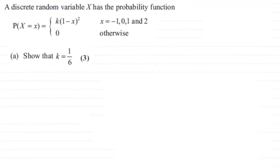Hi. Now in the first part of this question we're told that a discrete random variable X has this particular probability function. And for the first part of the question we've got to show that the constant k equals one-sixth.